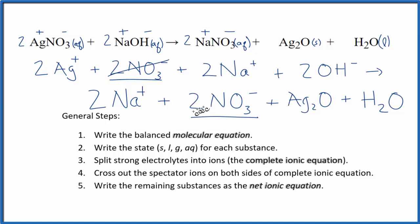Since they didn't change, we're really not interested in those. We can get rid of them. We have two sodium ions here in the reactants, and two in the products. Cross those out. But everything else is unique. And that gives us our net ionic equation.